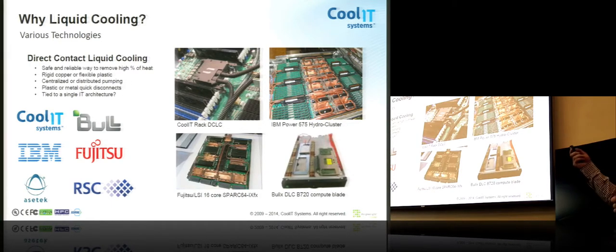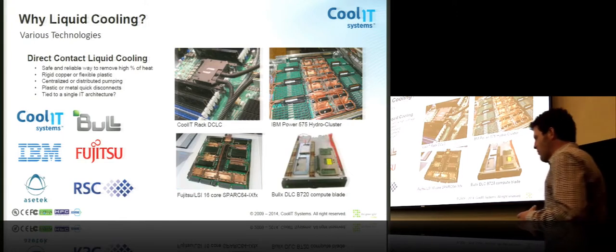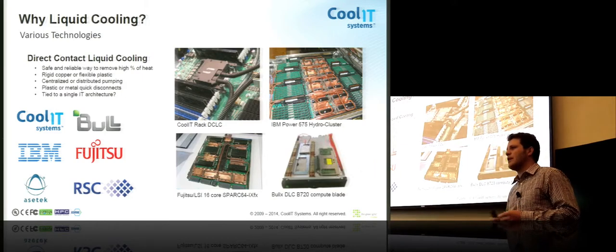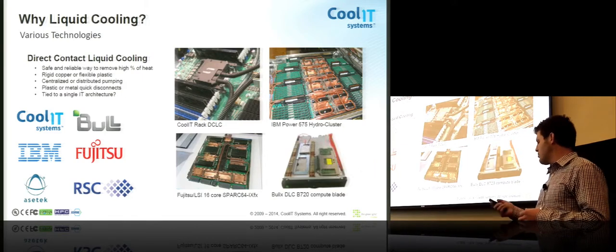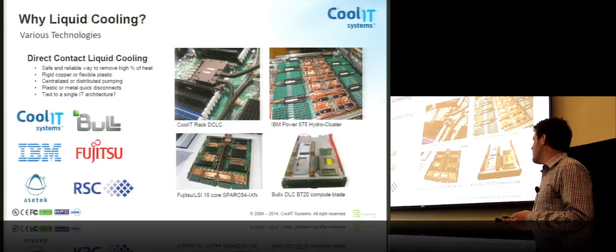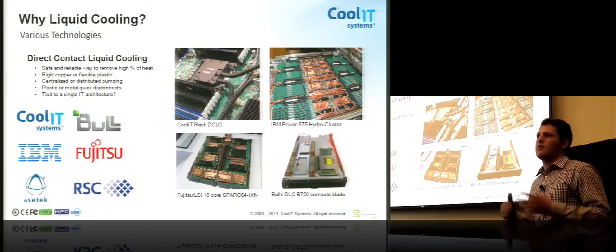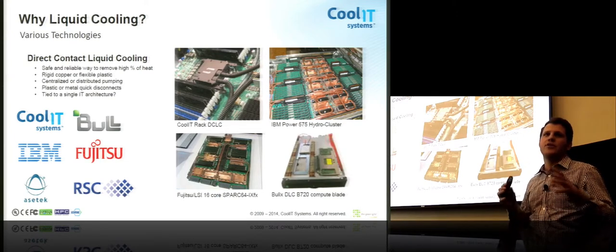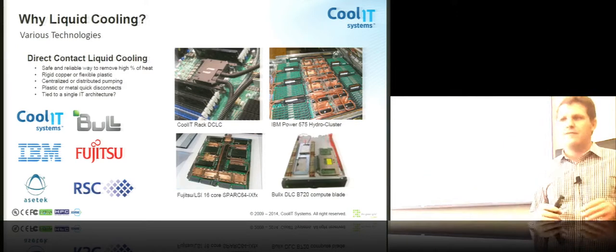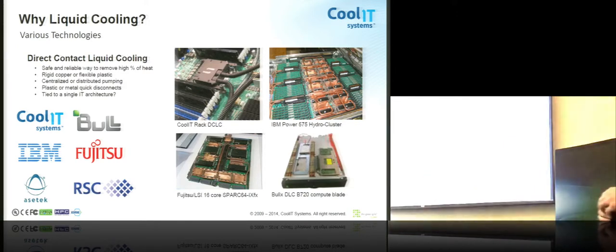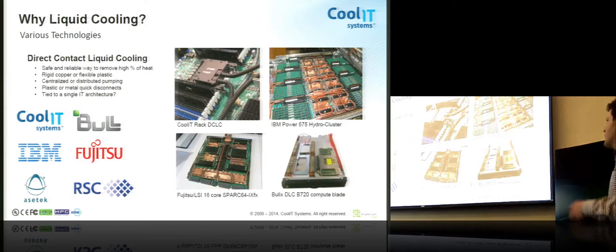I'll start with direct contact liquid cooling, which is what CoolIT does. There's several different ways of going about it and you have your options when you're looking at liquid cooling. Some of the vendors produce their own. Again, the Fujitsu and the IBM examples have been around for a really long time. These are rigid copper structures that fit that server type. They're not adapted to other servers.